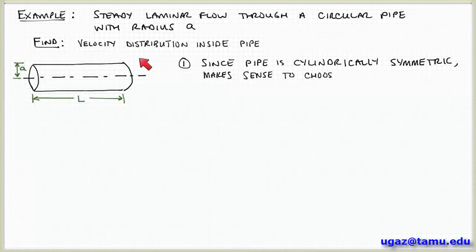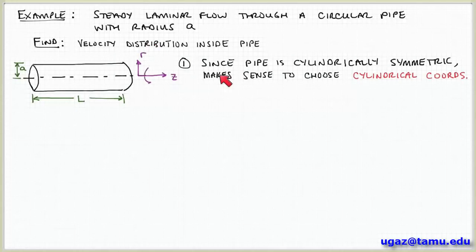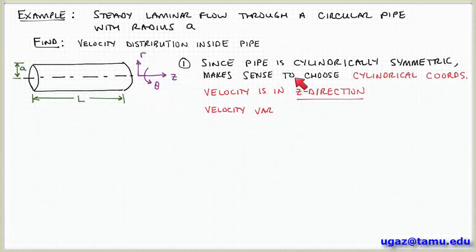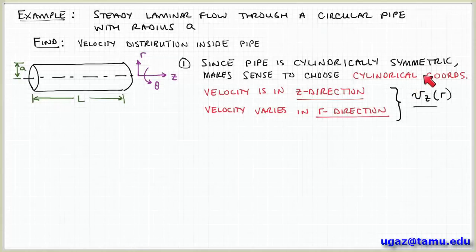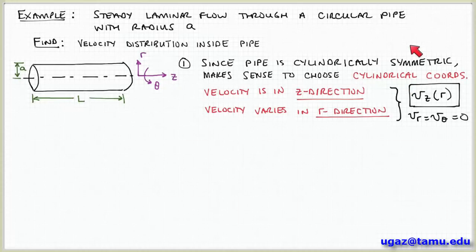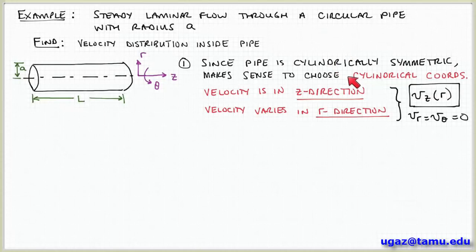Working through step one, we choose a coordinate system by asking what direction is the flow and in what direction does velocity vary. Since the pipe has a cylindrical shape, the symmetry suggests cylindrical coordinates. We could use Cartesian x and y coordinates, but that would make the solution more complicated. By exploiting the cylindrical symmetry, we use the z direction going from left to right as the flow direction, r as the radial direction perpendicular to z, and theta as the angular position about the z axis.